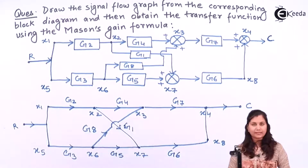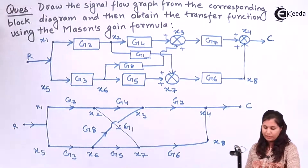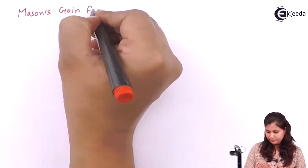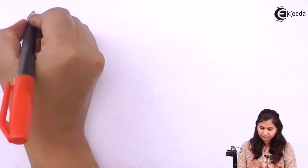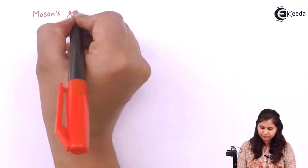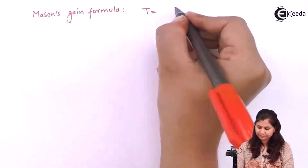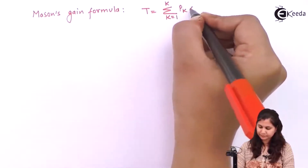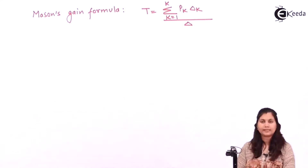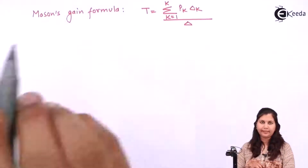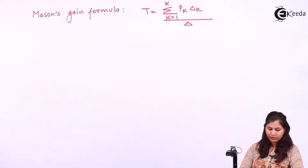Now we can apply Mason's gain formula. The formula is: T equals the summation of pk·Δk from k equals 1 to K, divided by Δ. For this we have to find out the forward paths, the loops, and the non-touching loops.